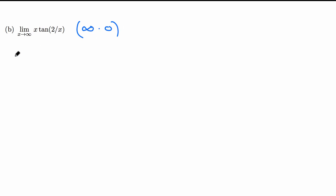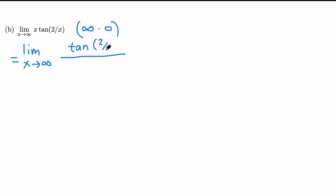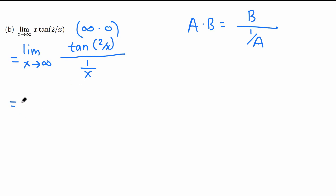What we do is make a fraction in the hope of using L'Hôpital's rule. We move x to the bottom: we write tan(2/x) on the top and 1/x on the bottom — because x times (1/(1/x)) equals x times x which is the same thing. When we plug in infinity, 1/∞ = 0 on the bottom and tan(2/∞) = tan(0) = 0 on top, so we have 0/0 and can use L'Hôpital's rule.